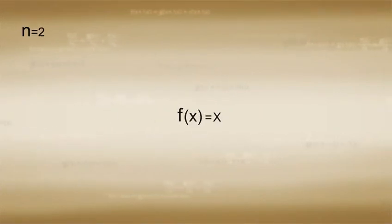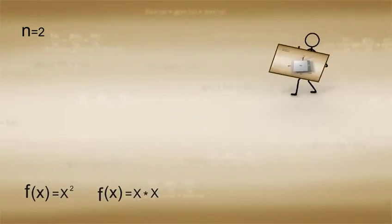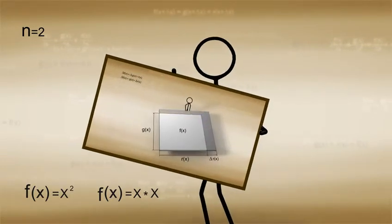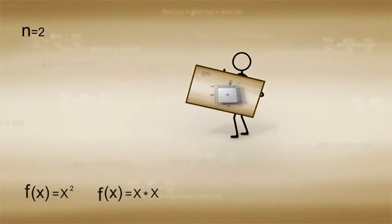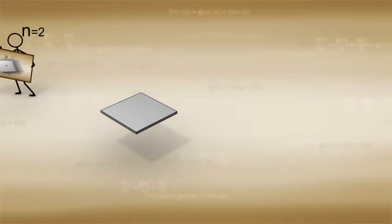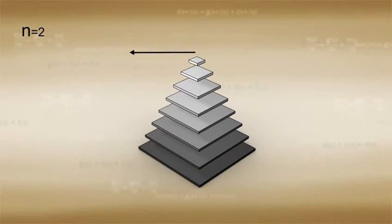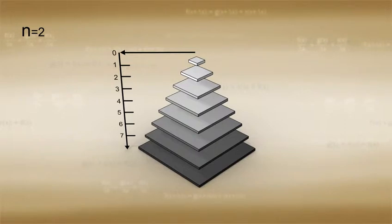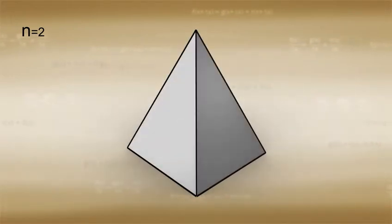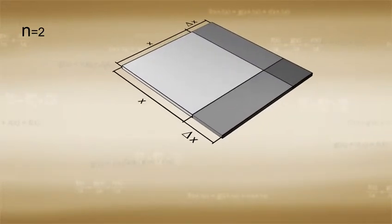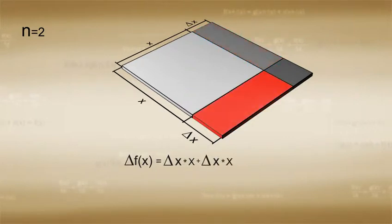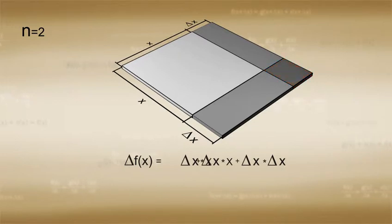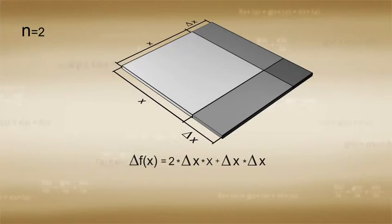Moving on to the case where f(x) is equal to x squared, we can immediately rewrite this as f(x) is equal to x times x. The moment that we do so, we can invoke our experience with finding derivatives of two multiplied functions and represent the instantaneous value of this function as a square. We are only interested in the representation of the function's value at one instant of x and how the change in x affects the change in the function value. Notice that delta f(x) is equal to delta x times x plus delta x times x plus delta x times delta x.